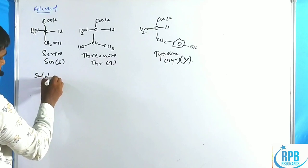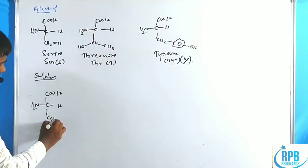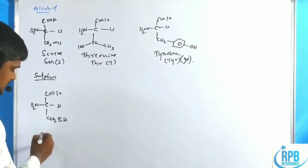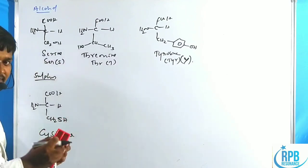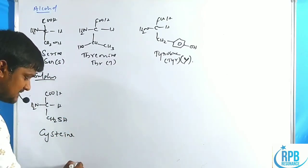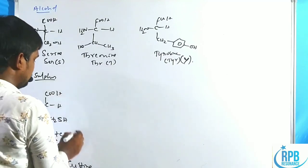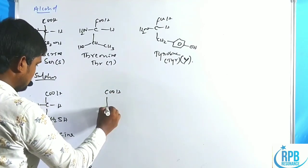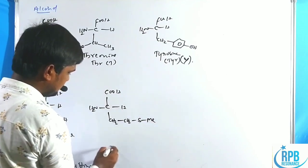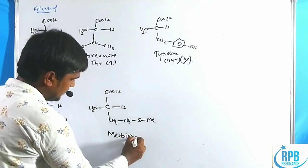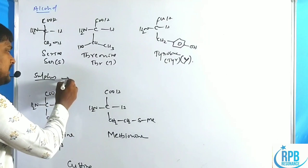Now sulfur-containing amino acids. If R = CH2-SH, the compound is cysteine (CYS, C). Two moles of cysteine combine together to give cystine — note these two are different compounds. Another sulfur-containing amino acid has R = CH2-CH2-S-CH3; this is called methionine (MET, M). So methionine and cysteine are the sulfur-containing amino acids.